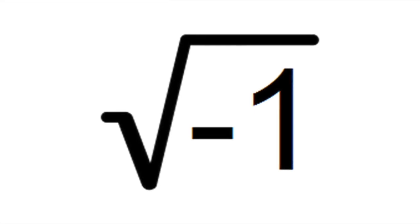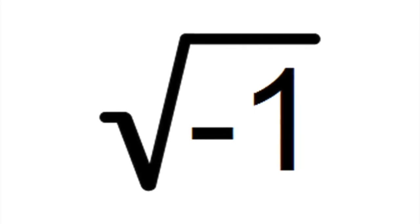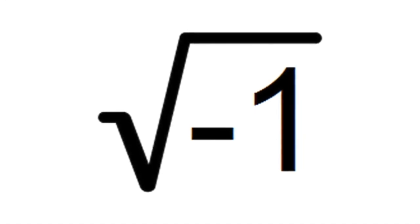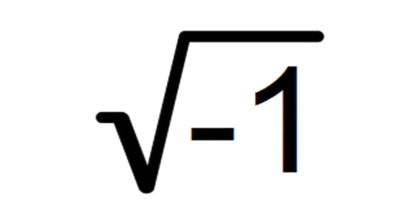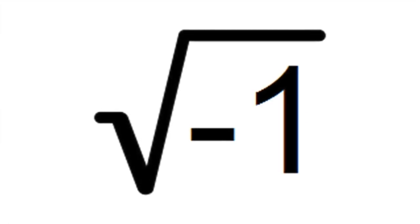i, the square root of minus 1, was invented, some might say discovered, in the 16th century, in order to solve equations such as x squared equals minus 1.